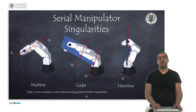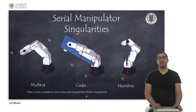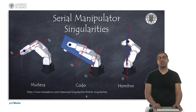Serial manipulator robots have three types of singularities: wrist, elbow and shoulder singularities. Wrist singularity occurs when axes four and six are aligned, as a consequence of the well-known gimbal lock. The elbow singularity appears in the change between elbow up and down configurations, just when the point of the wrist is contained in the plane formed by axes two and three. Finally, the shoulder singularity appears when the point of the wrist passes through the first axis of the robot.